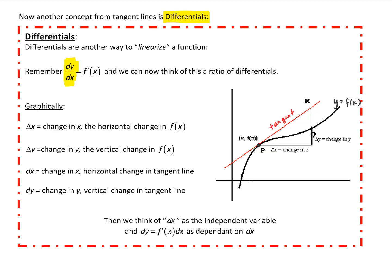We look at another point q on the curve. The difference horizontally between those two points is called delta x — the change in x, the horizontal change. So this distance in my graph is called delta x: the horizontal distance between the two points.